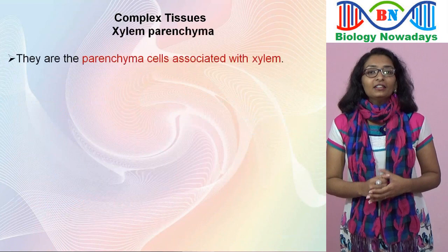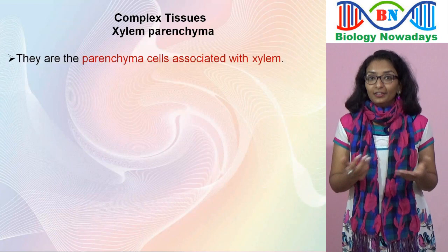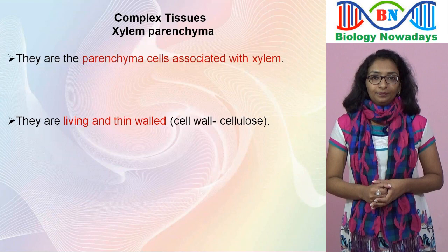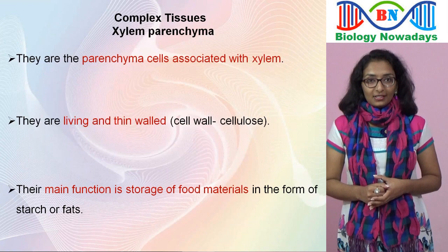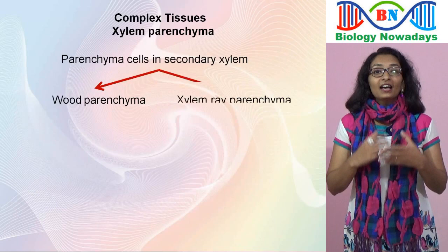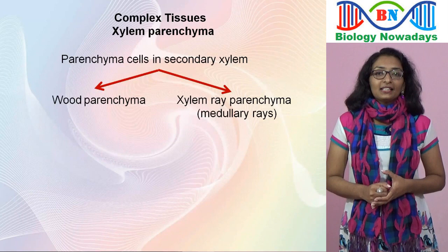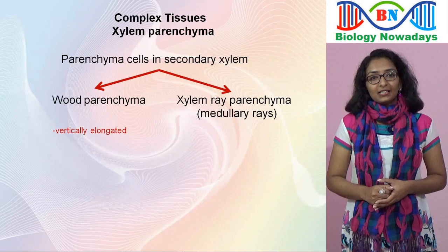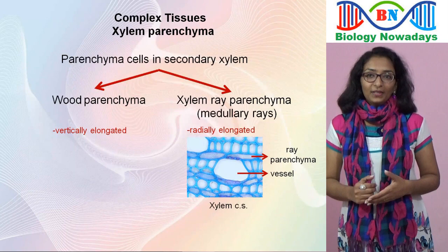Xylem parenchyma cells are the parenchyma cells associated with xylem. They are living cells, thin-walled, with cell walls made up of cellulose. The main function of xylem parenchyma cells is storage of food materials in the form of starch or fats. In the secondary xylem of trees, there are two types of parenchyma: wood parenchyma and xylem ray parenchyma or medullary rays. Wood parenchyma cells are elongated in the vertical direction, while ray parenchyma cells are elongated in the radial direction. In addition to storage, ray parenchyma cells also help in the radial conduction of water and solutes.